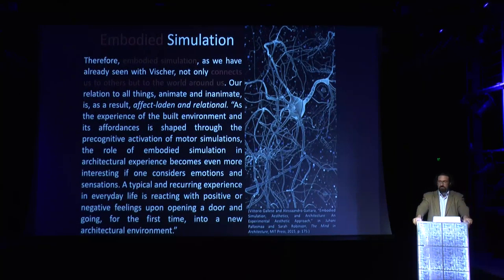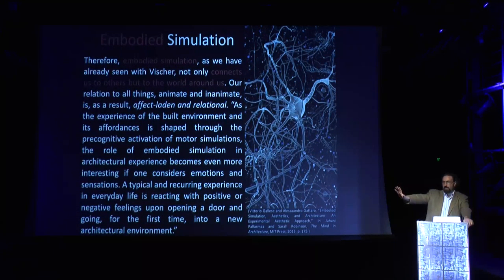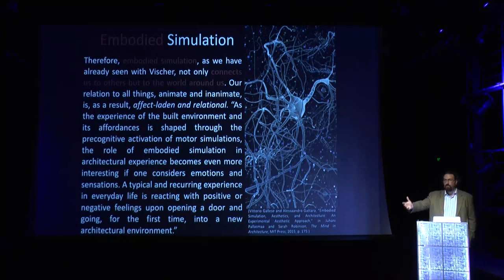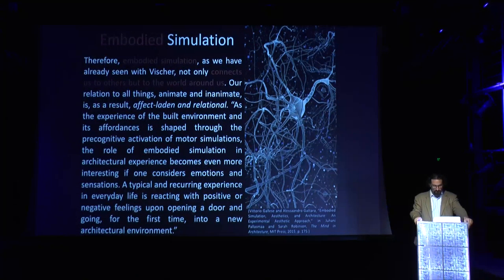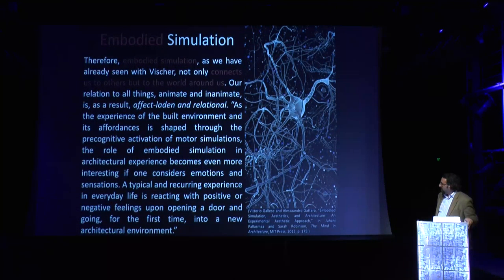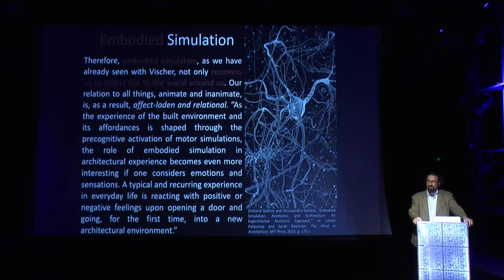We can now bring back together the modern subject and the world, because this theory shows we are always interacting and connected to things around us. We don't stand over against other things — the moment I walk into a room, I'm already engaged at an unconscious level and have assimilated the movements of the columns around me. Our relationship to all things, animate and inanimate, is therefore affect-laden and relational — there is always an emotional content to every act of perception, and emotion doesn't come later; it is part of the perceptual act itself.